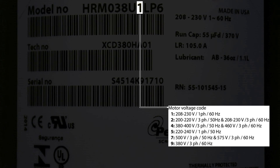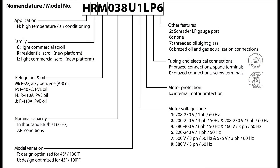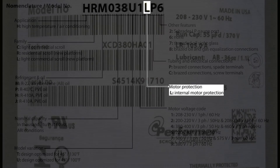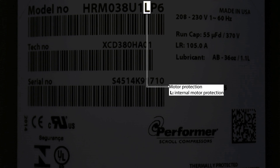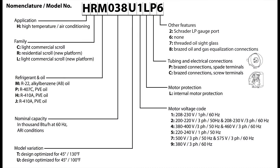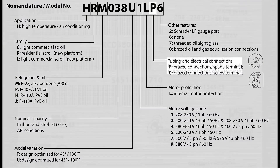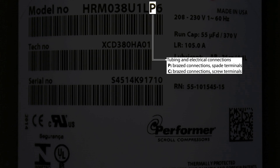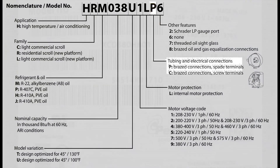The eighth digit in the nomenclature signifies the motor voltage code, denoted by a number which defines the voltage, number of phases, and frequency. The ninth digit specifies the type of motor protection the compressor has, though all compressors in the H-Series have internal motor protection. The tenth digit signifies the tubing and the electrical connections, either a spade terminal or a screw terminal.